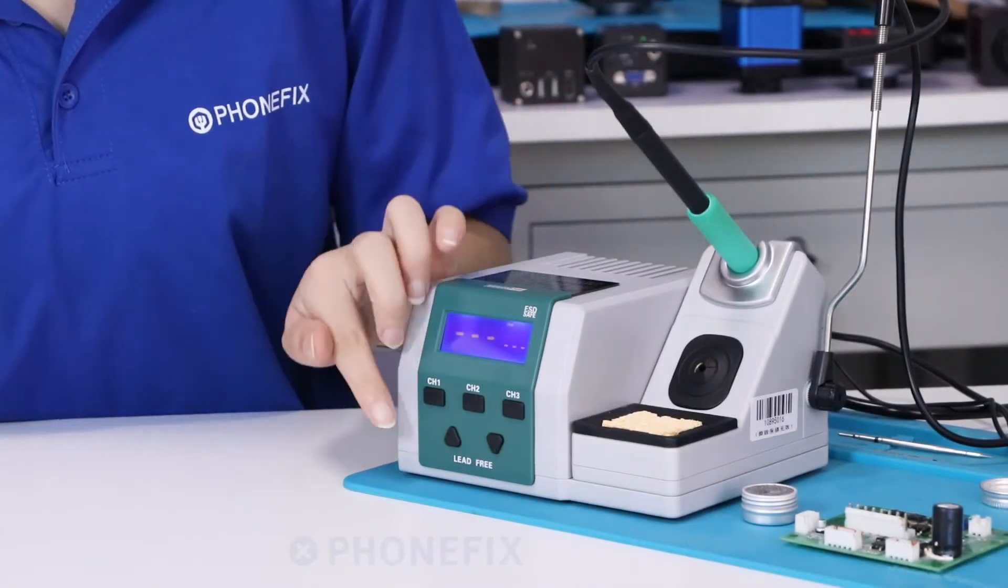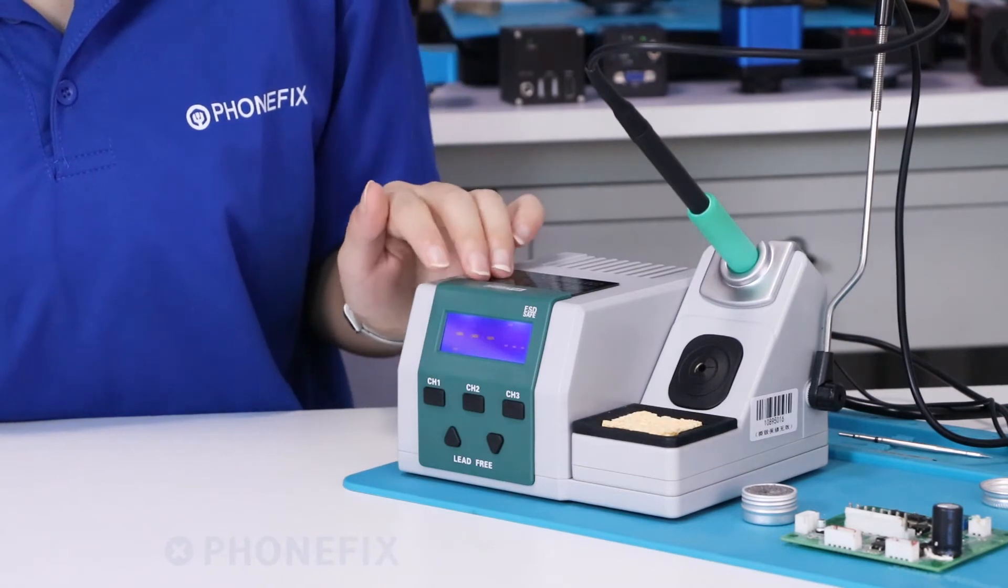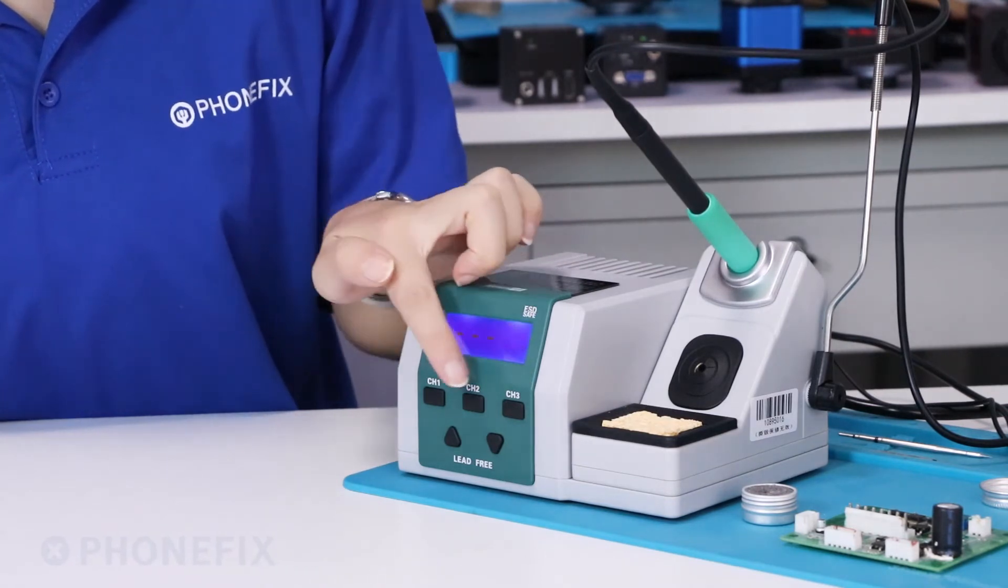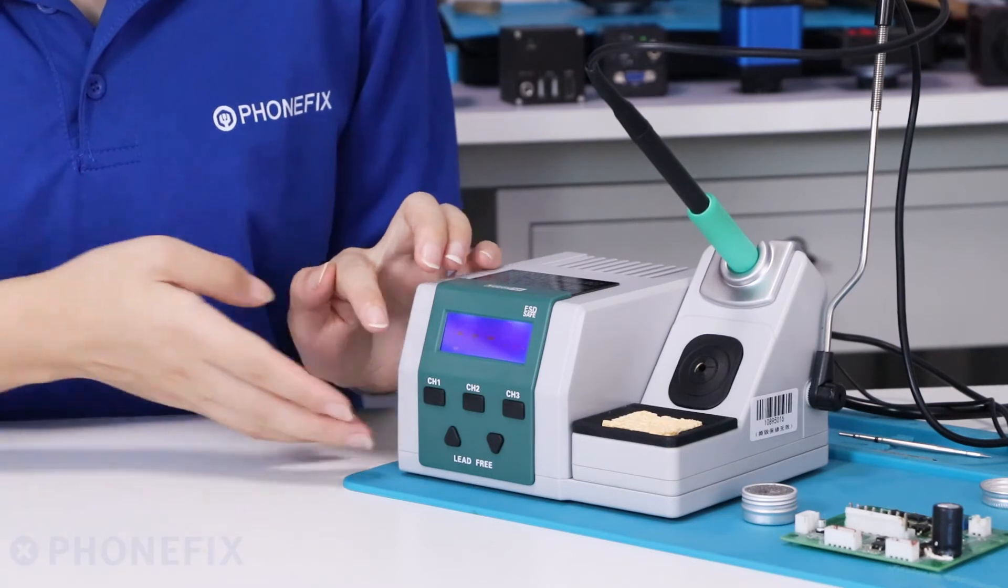The T26 soldering station is quite easy to use. It comes with a digital screen that can show the temperature.